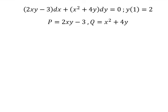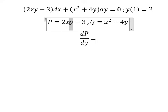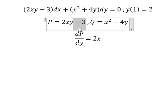That means we need to do the first derivative of M with respect to y. So we have y in here. First derivative of y, we have number 1. So we have 2x. That is about the constant, so you get zero.